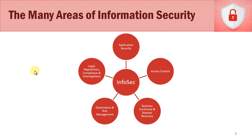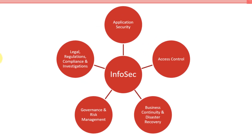There are five different areas I want to talk about, and we'll start at the top with application security. Application security deals with everything in regards to developing applications, making sure that we are utilizing a secure development lifecycle methodology, making sure that information security and secure coding practices aren't an afterthought. It also deals with testing as well as accreditation and certification.